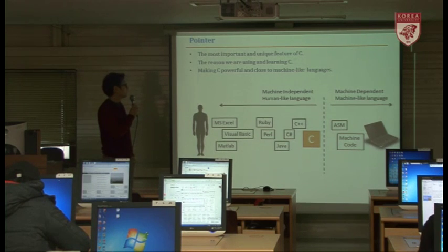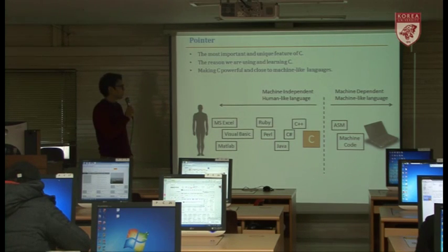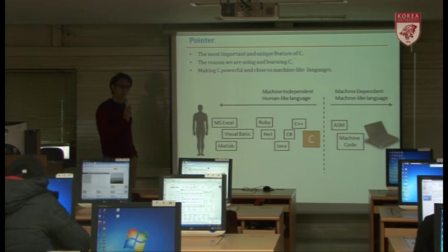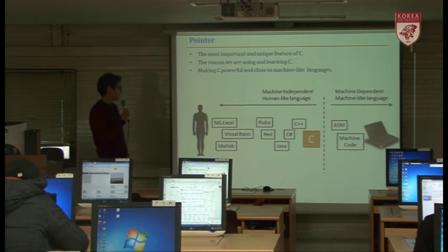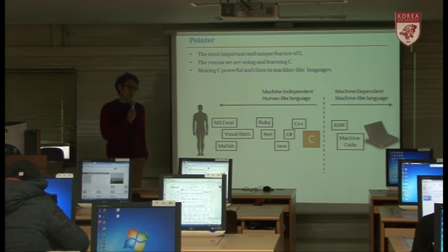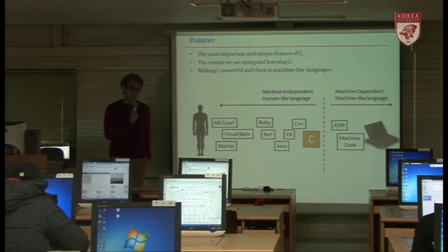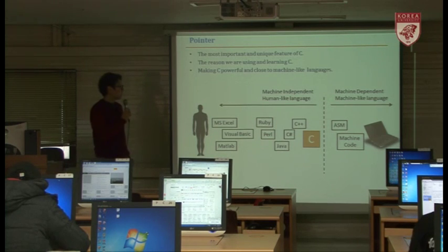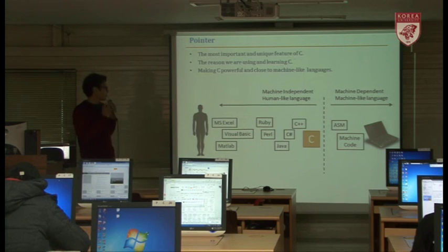Pointer is the most important and unique feature of C, and this pointer is actually the reason that we are using and learning C. There are many other programming languages — like Java, Python, Ruby — however, the reason we are choosing C as the basic programming language, especially for the engineering school, is because of the pointer. Pointer actually makes C very powerful and very close to machine-like language.